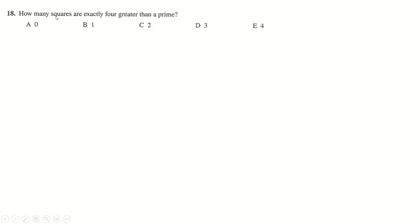Question number 18. How many squares are exactly 4 greater than a prime? So if we say prime plus 4 equals square. Prime, I can just write as p. A square, I can write as n squared. And I'll take away 4 from both sides. And as soon as I do that, you might spot the trick here. This factorizes to n minus 2, n plus 2. Of course, a prime can't be two things multiplied together unless one of those things is 1.